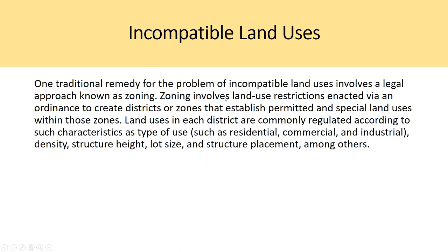One traditional remedy for the problem of incompatible land uses involves a legal approach known as zoning. Zoning involves land use restrictions enacted via an ordinance to create districts or zones that establish permitted and special land uses within those zones. Land uses in each district are commonly regulated according to type of use — such as residential, commercial, and industrial — as well as density, structure height, lot size, and structure placement. If someone is flipping a home and turning it into a store without going through the zoning board, from a purely economic point of view they're acting inefficiently — that's called rent-seeking behavior.